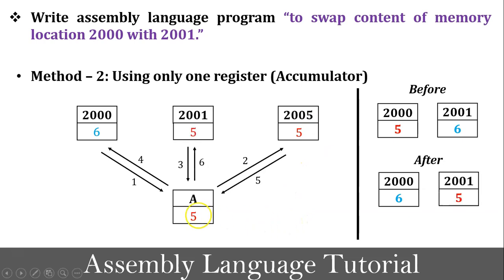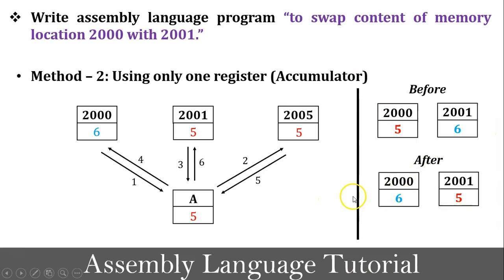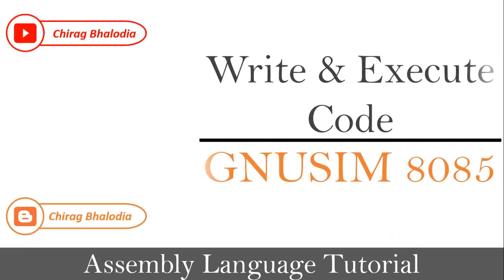In step 5, value 5 is copied into the accumulator from memory location 2005. In step 6, value 5 is copied into memory location 2001 from the accumulator. After execution, the contents of both memory locations are swapped. Since we cannot use a second register for temporary storage, memory location 2005 was used instead. This completes Method 2.